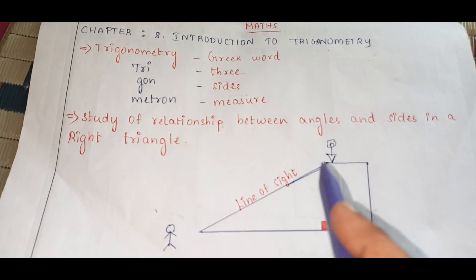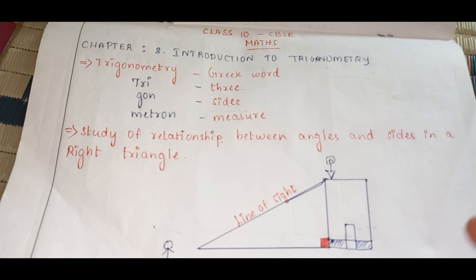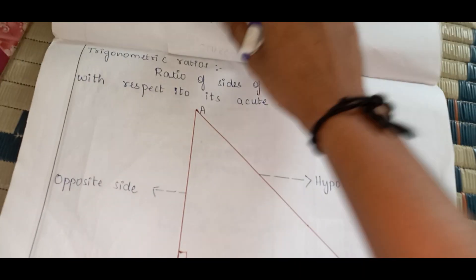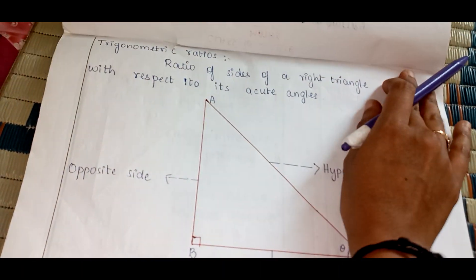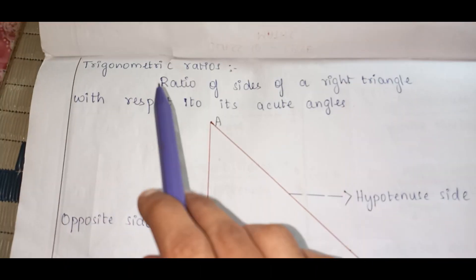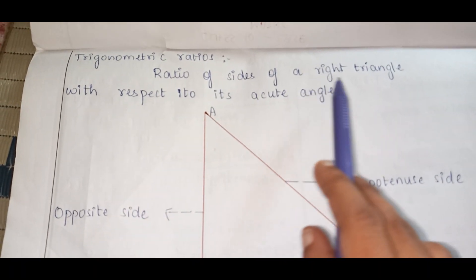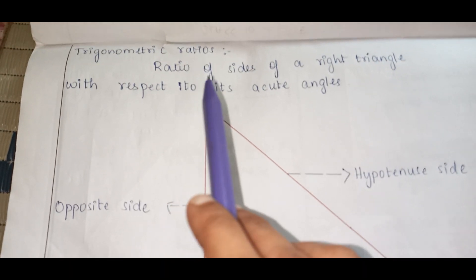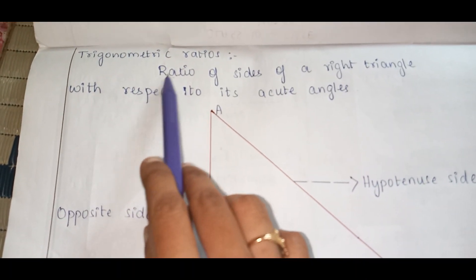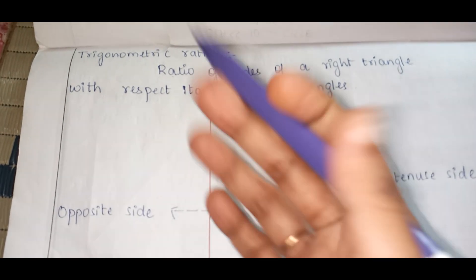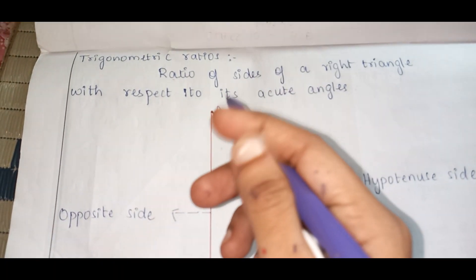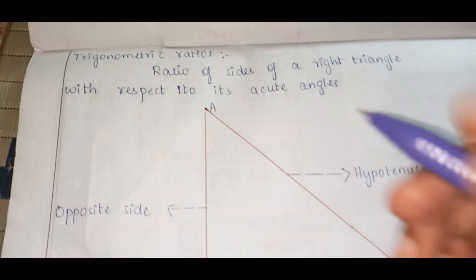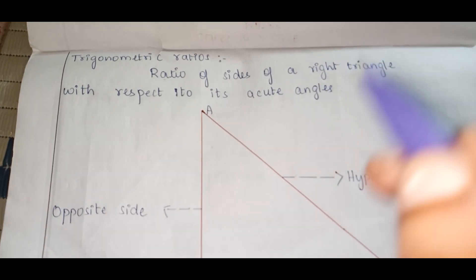I hope you are clear with the introduction part. Now we are going to the next part: Trigonometric Ratios. What do you mean by trigonometric ratio? It is the ratio of sides of a right triangle with respect to its acute angle. First of all, let me clarify what ratio means. Ratio means comparing two quantities by division.